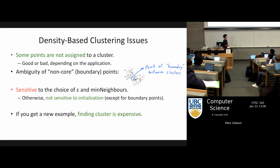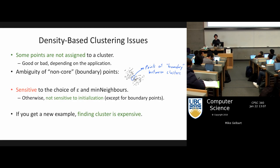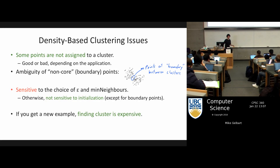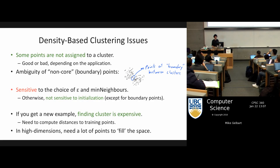Another thing with k-means is that when we added a new point we just computed its distance to all the means. Whereas here we have to think about the distance between this point and all the other points, which is potentially much more expensive.